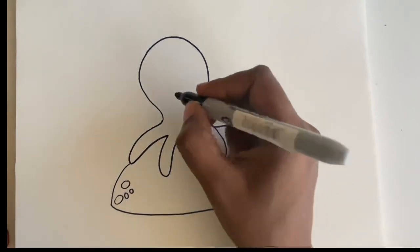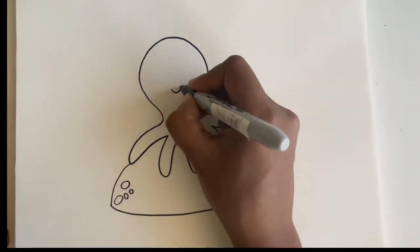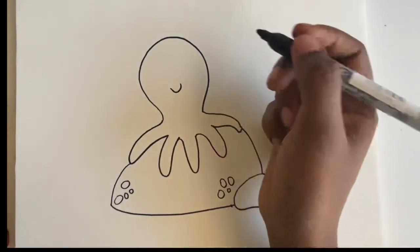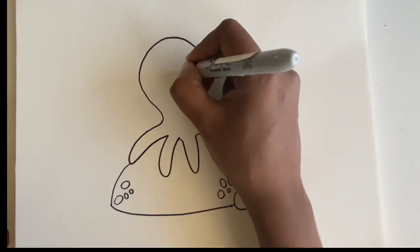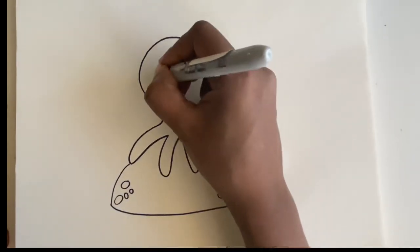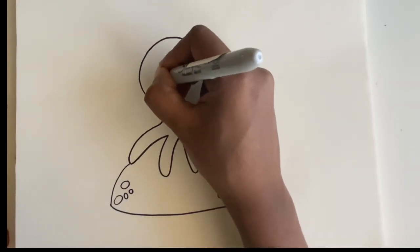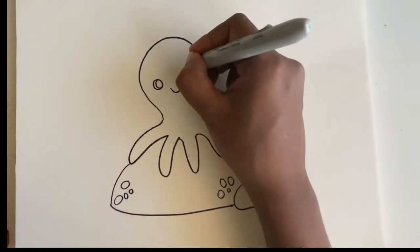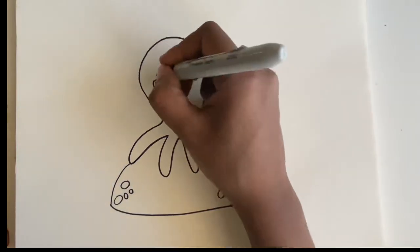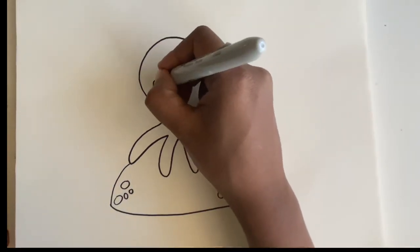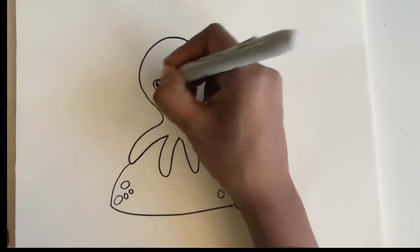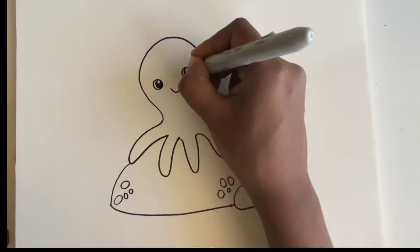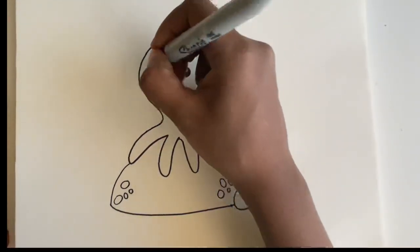Now let's make his face, so make him smile. Make two circles for his eyes, a little eyeball. I'm just coloring it in, leaving a little spot. That's good.